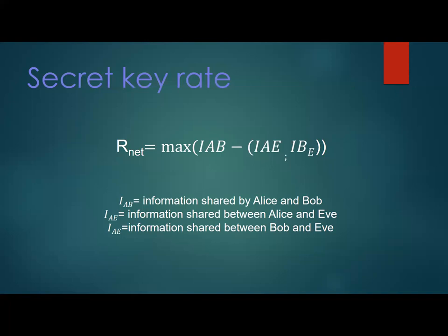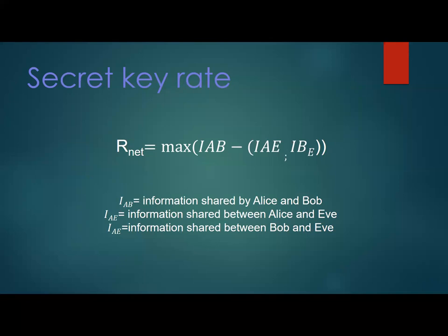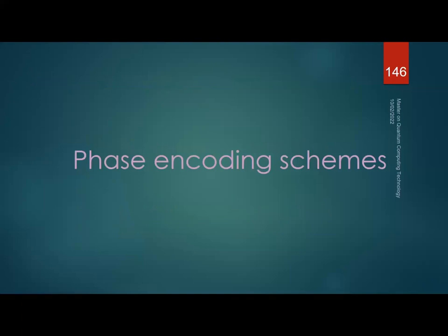The secure key rate is essentially the raw key rate minus the information Eve could have gained. You subtract the information shared between Alice and Eve, and between Bob and Eve, from the raw rate — considering all attacks in the literature that Eve could be performing.